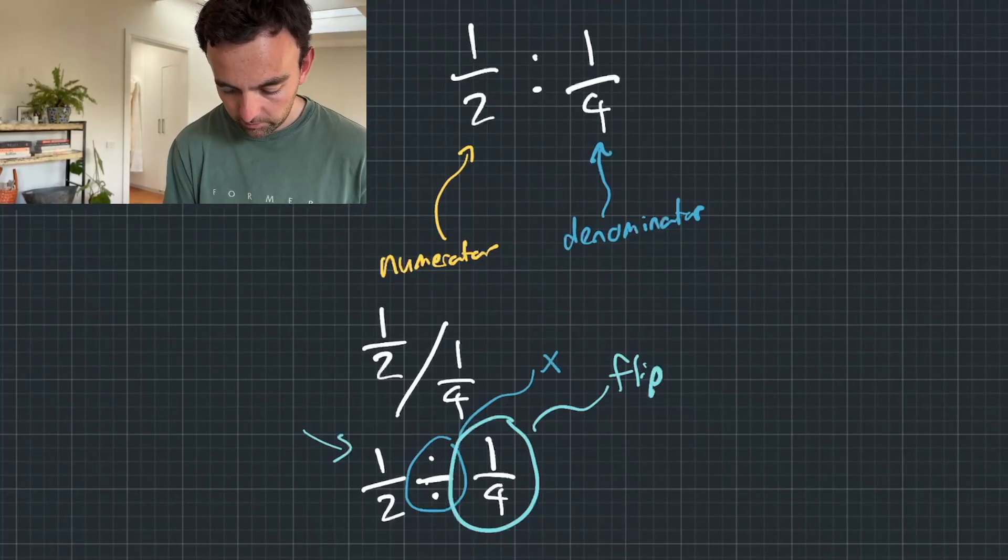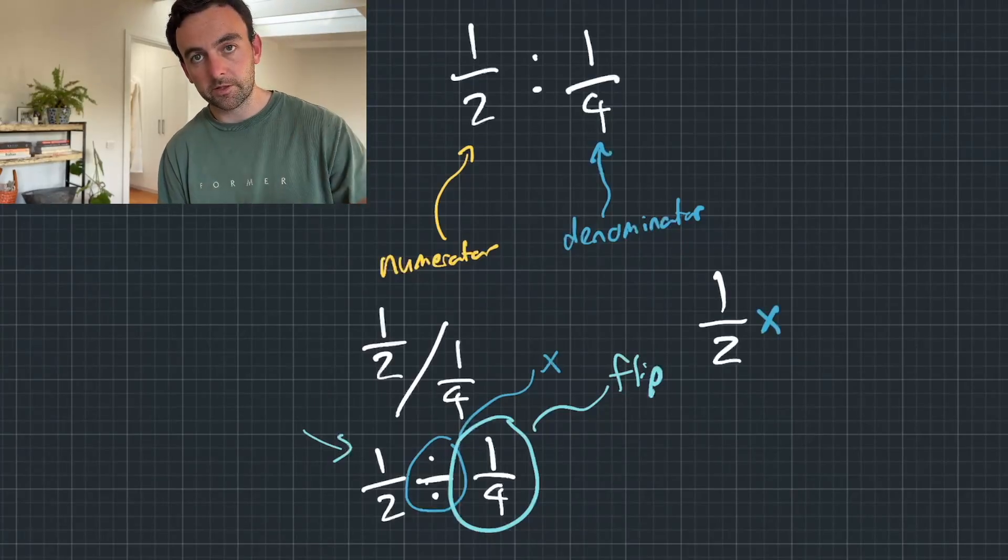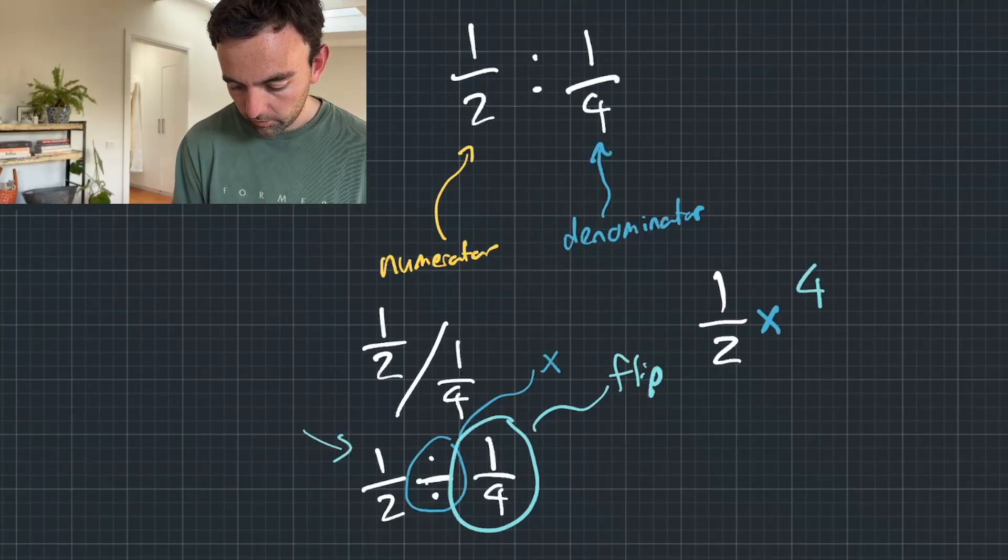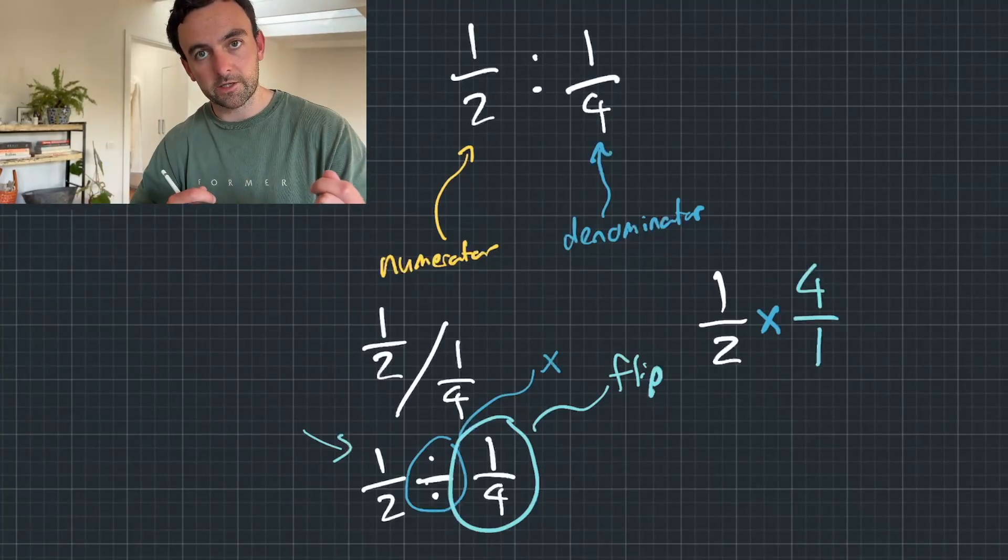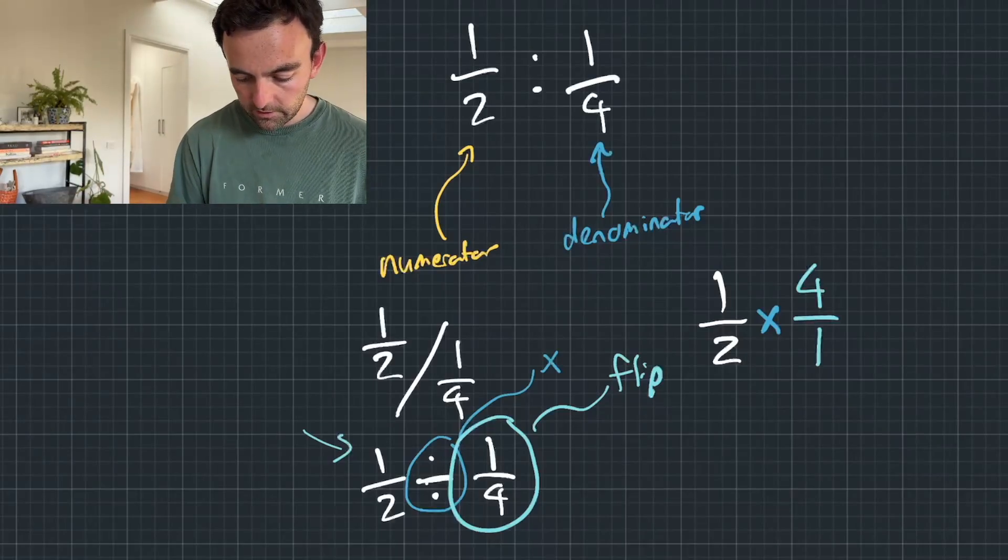So what that would look like is one over two times, because we've flipped the sign from divide to multiply, four over one. So I've flipped that fraction on its head. So I've put the denominator as the numerator and vice versa.